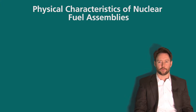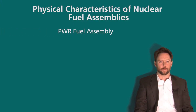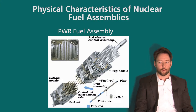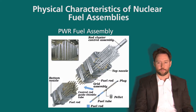Let's start with some general physical characteristics of nuclear fuel assemblies. We'll start with a pressurized water reactor, or PWR, fuel assembly. We see an illustration of a PWR assembly with all its sub-components. Starting from the bottom right corner, we have a fuel pellet that is placed in a fuel rod, and the fuel rods are arranged in a square lattice that goes into the fuel assembly.